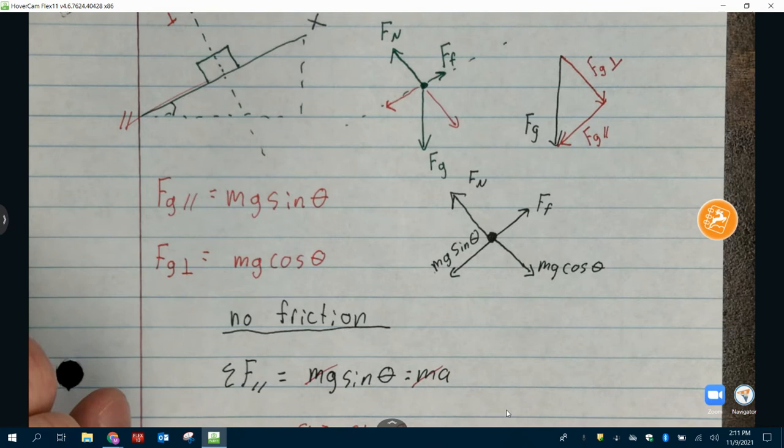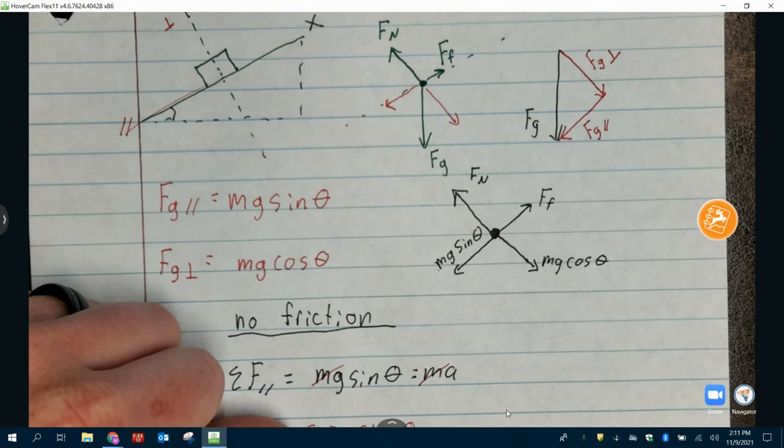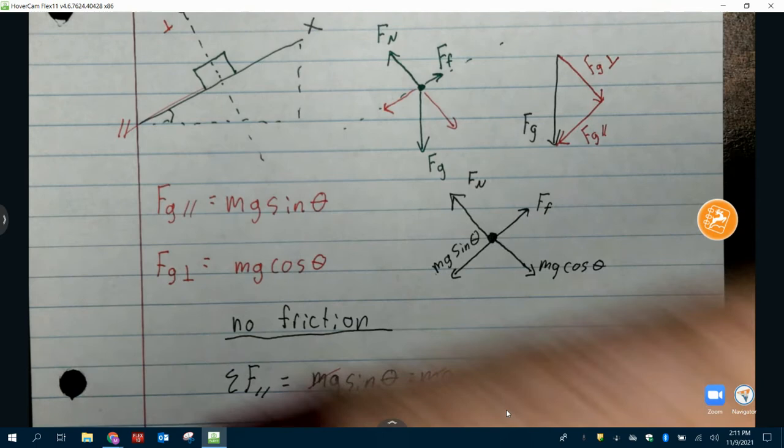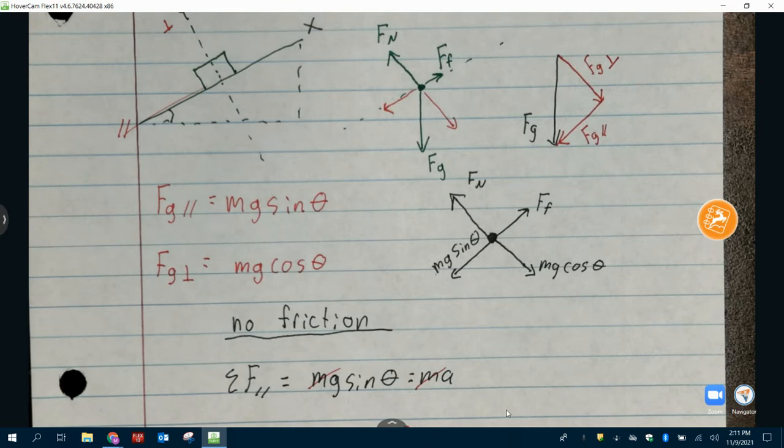Now what do you notice? Both sides have M. So the M's cancel, and you are left with the acceleration down a ramp is equal to G sine theta if there's no friction and no other forces. Does M show up in this equation? No. So does mass affect how fast something slides down a ramp? No. Does that make sense? Yes. Does everything fall at the same rate? Everything falls at the same rate anyway.